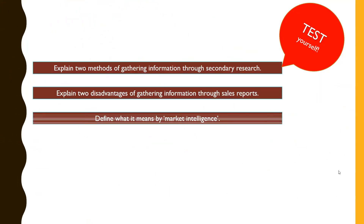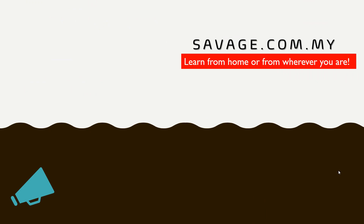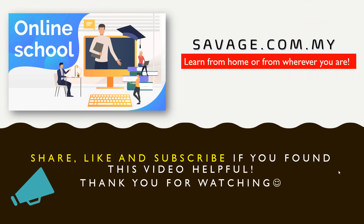Let's test yourself — you can do this as homework. Questions include: methods of gathering information through secondary research, disadvantages of gathering information through sales reports, what is meant by market intelligence, two disadvantages of using secondary research, and two disadvantages of using the internet. Use this video and your school textbook or notes to help. That brings us to the end of today's short lesson — please share if you found it useful, and have a great day ahead!